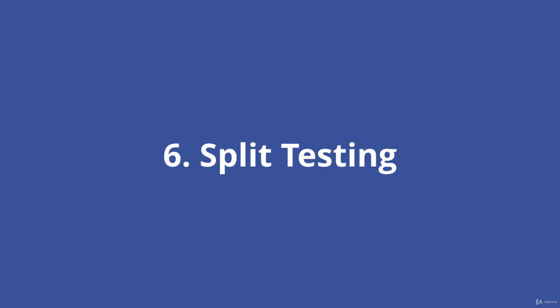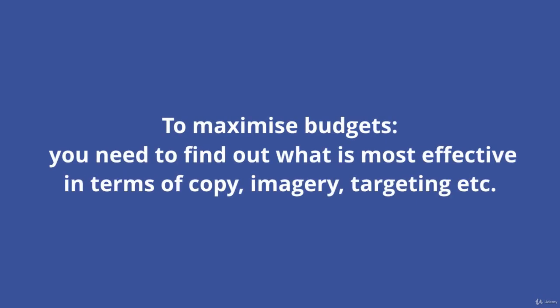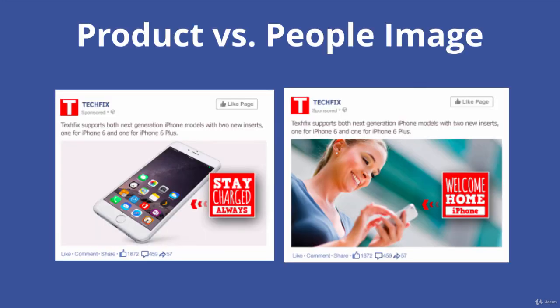The sixth key to success with Facebook ads is split testing. If you want to maximize your budget, you need to find out what is most effective in your ads in terms of copy, imagery, targeting, and so on. When you put out a campaign, don't just have one ad, one image, and one audience — you want to test different variables. For example, you could have two images and test which one gets more clicks: a product in the image versus a person using the product, and test to see which one performs better.